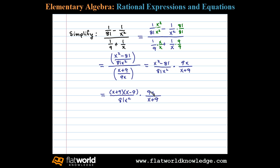Next we cancel. 9 divides into 81 9 times. One of these x's will cancel leaving me with an x in the denominator. The factor x plus 9 cancels with the factor x plus 9 in the numerator and we're left with x minus 9 divided by 9x.